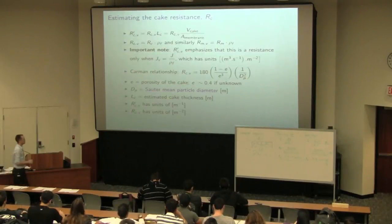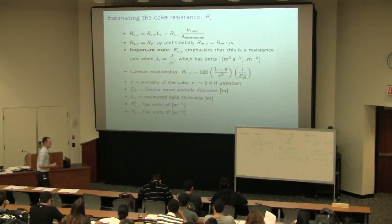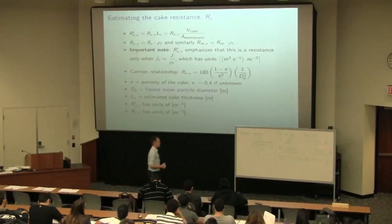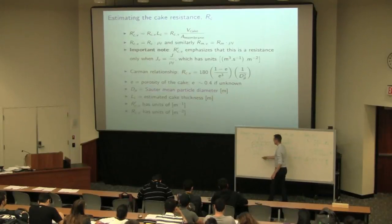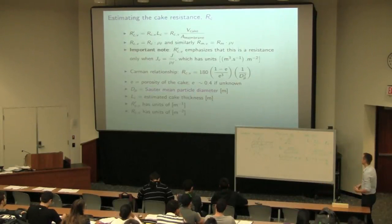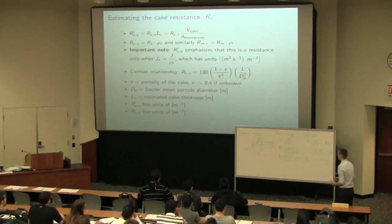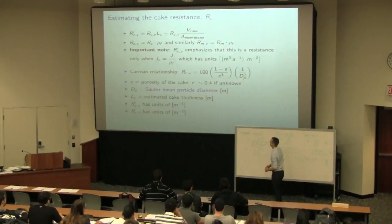But there are some correlations to calculate an estimate of this cake resistance. But the one thing to bear in mind is that these correlations will be for a very specific set of units, and that's what a bit of this complication on this slide is about. The correlations for RC that you find are generally expressed when flux is in the volumetric form.